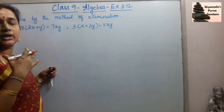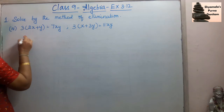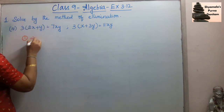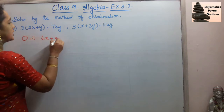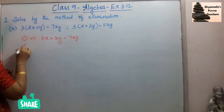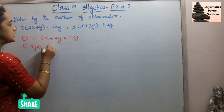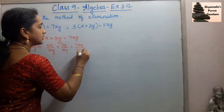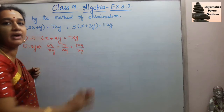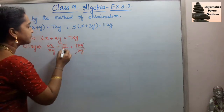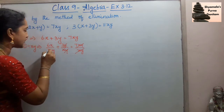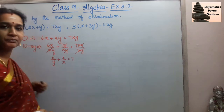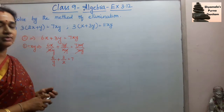To remove the xy term, we will divide both equations by xy. For the first equation, we first simplify: 3(2x + y) expands to 6x + 3y = 7xy. Now dividing throughout by xy: 6x/xy + 3y/xy = 7xy/xy. The x's and y's cancel, giving us 6/y + 3/x = 7. This is the simplified first equation.